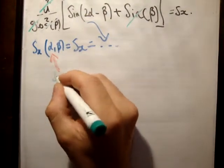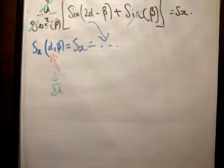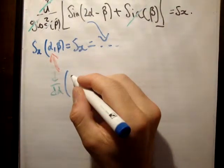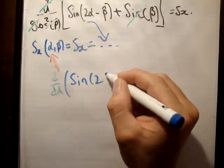So what we're left with is sine 2 alpha minus beta. So what we need to do is d/d alpha. That means differentiate with respect to alpha. We need to differentiate sine of 2 alpha minus beta.